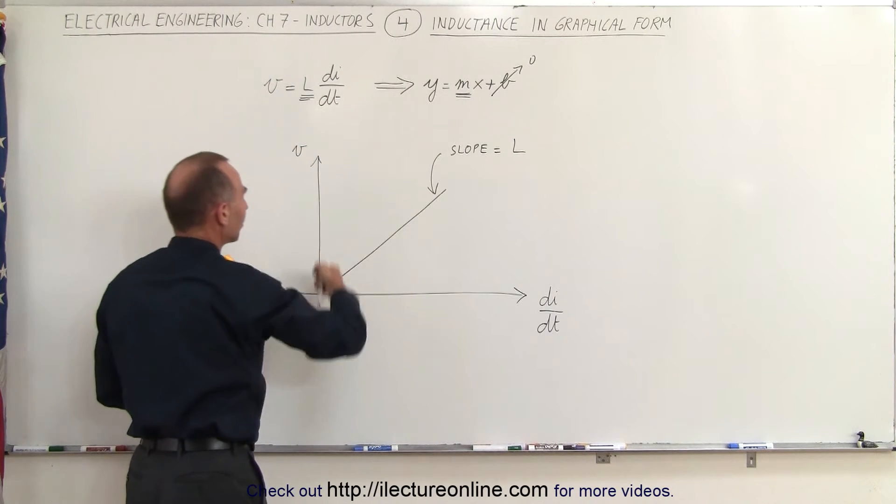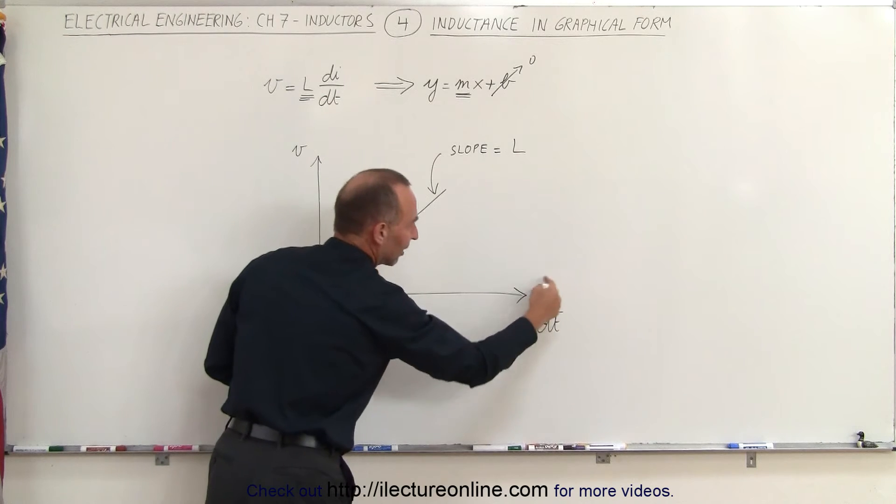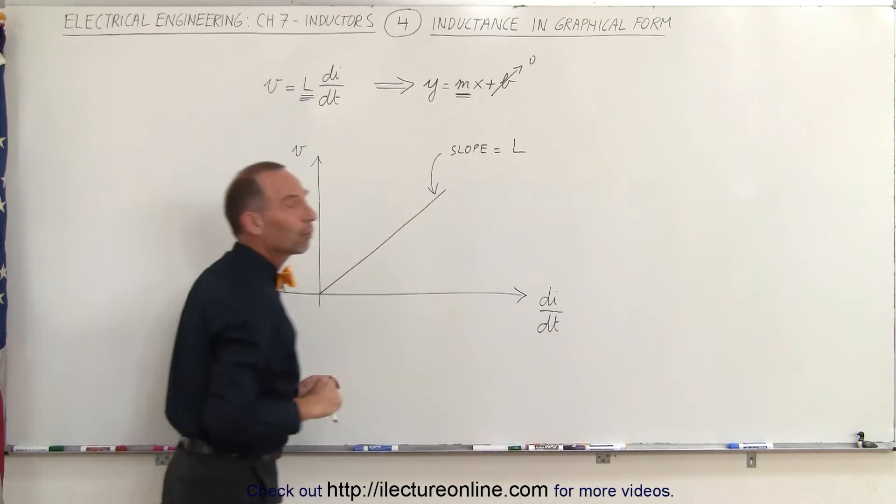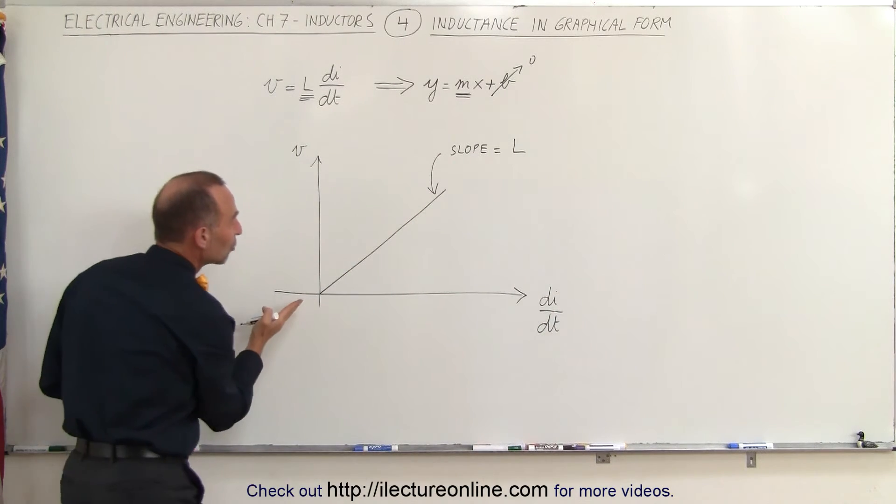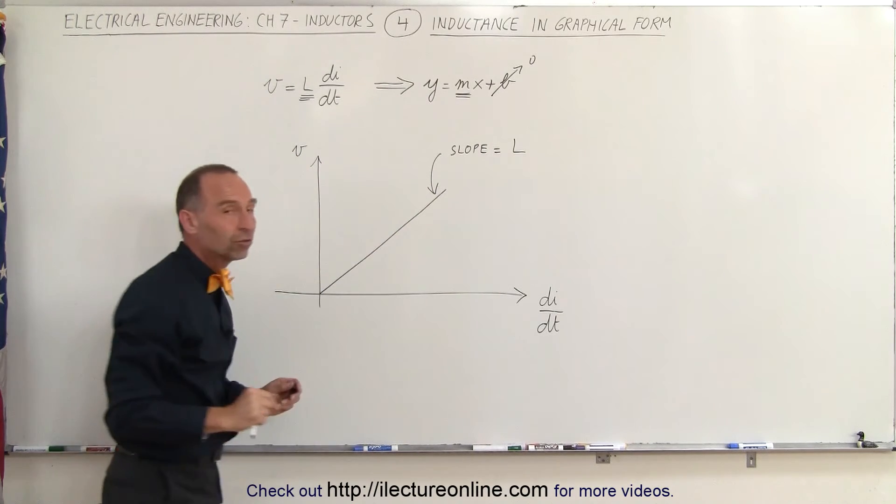So when we draw the graph here, on the vertical axis we have the voltage across the inductor. On the horizontal axis we have the rate of change of the current with respect to time. And then when we draw a straight line like this, the slope of this line represents the inductance of the inductor.